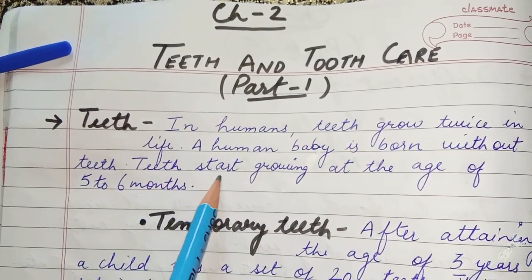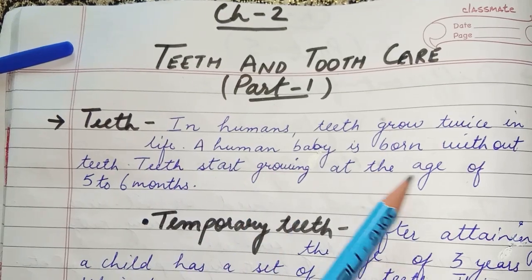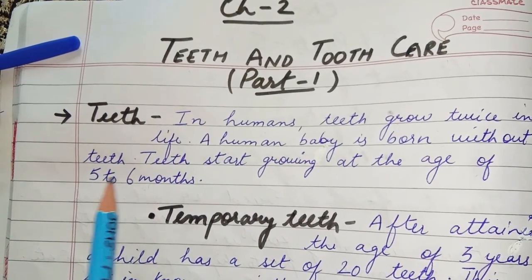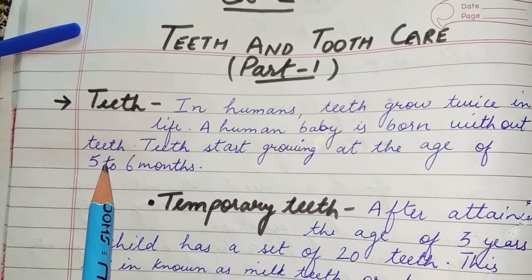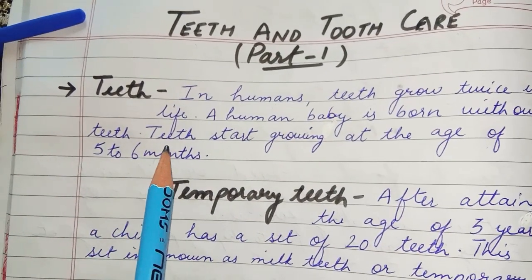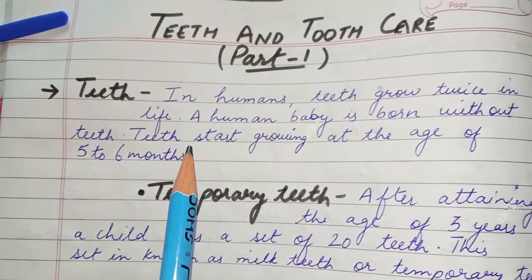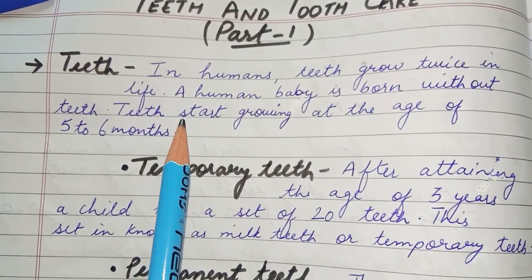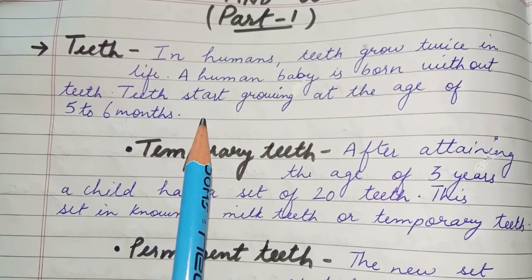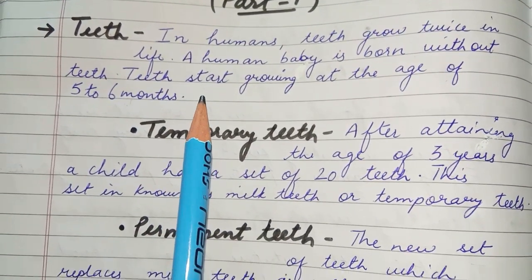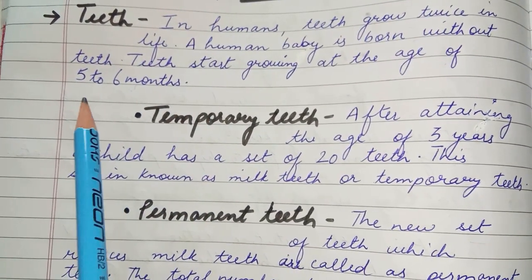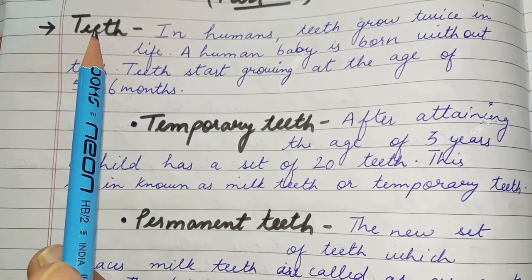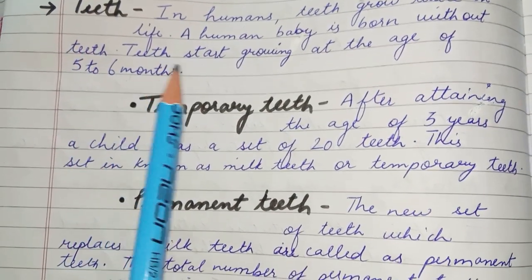Teeth start growing at the age of five to six months. We all know it very well that the human baby is born without teeth, and teeth start to grow after five to six months.